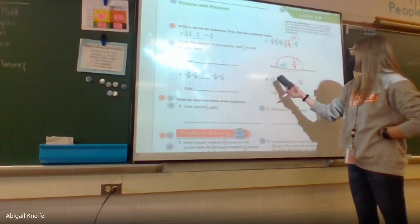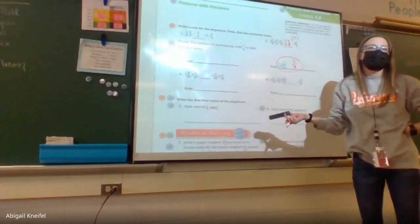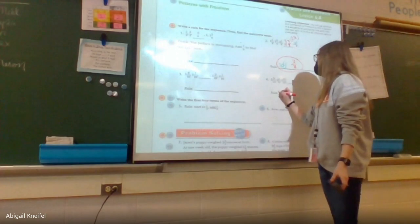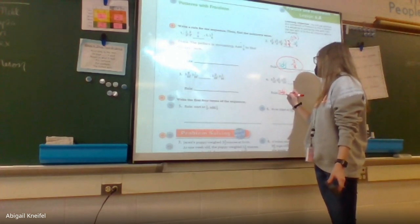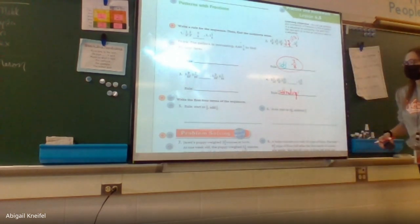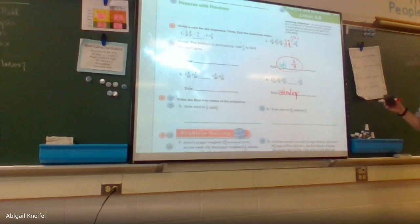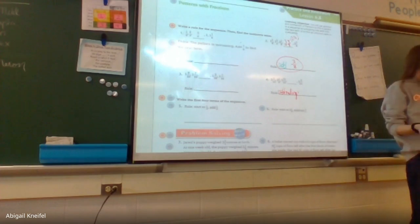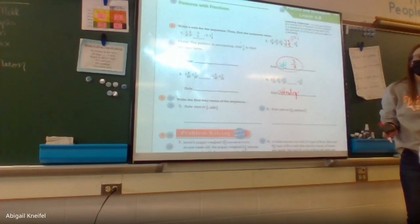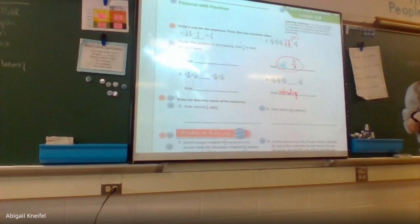We're going from two to one — they're going down, which means we're going to be subtracting something. We know we're subtracting; we just don't know what. To find the rule, we take two adjacent terms and subtract them to find the difference.